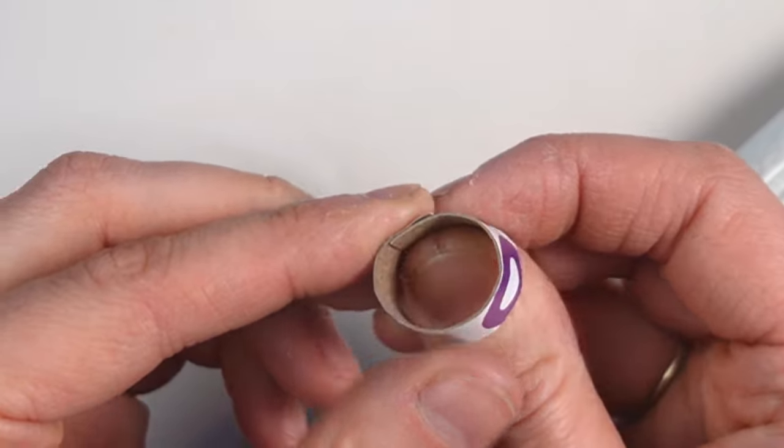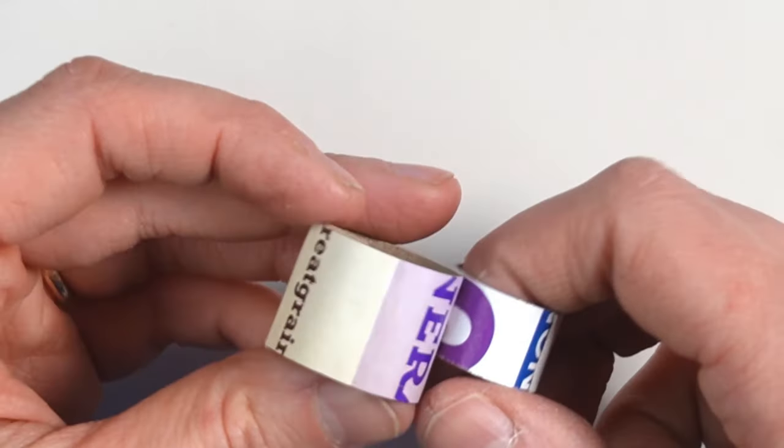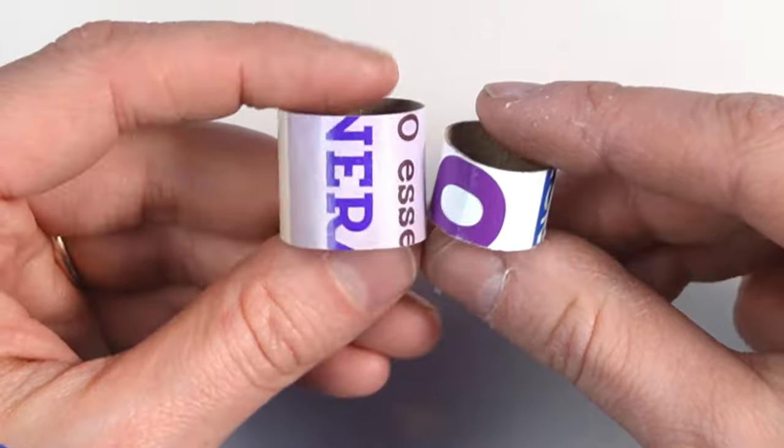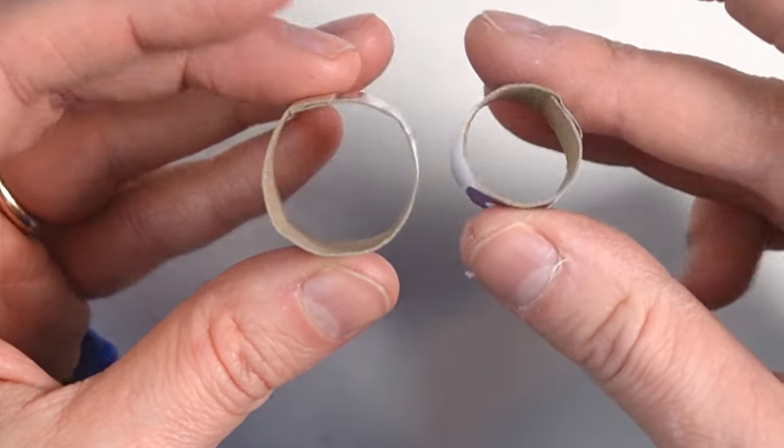This will make up the walls of our pot. I like this technique because I don't have to hunt around my house for items that have the correct diameter. I can make whatever size pot I want.